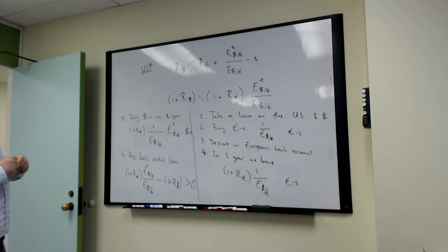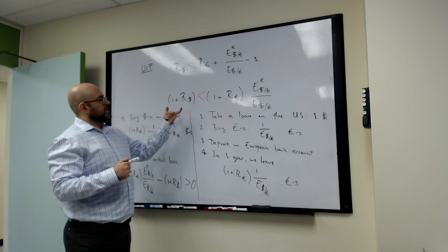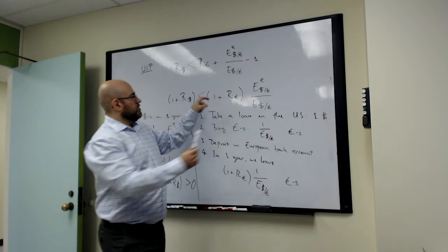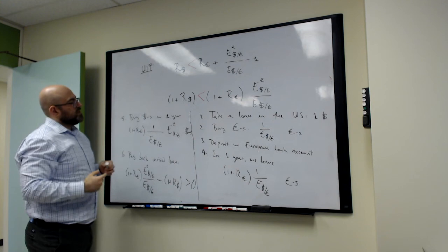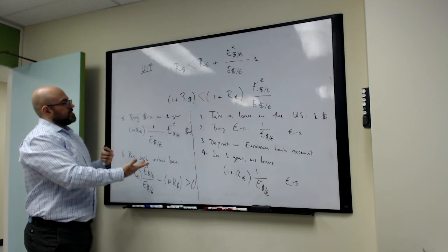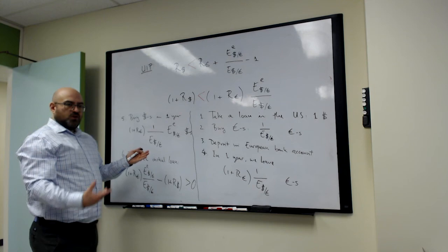You look at the rate of return across the two destinations. You express them in the same currency, so we have dollar returns to a US deposit and dollar returns to a Euro deposit. So we look at rates of return expressed in the same currency, and whenever they are not equal, there is a strategy like this which allows you to make money by borrowing where the rate of return is low and depositing where the rate of return is high.